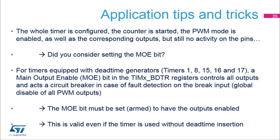This slide explains a common support case where the whole timer is configured, the counter is started, the PWM mode is enabled along with the corresponding outputs, but still there is no activity on the pins. Usually, this is because the MOE bit was not set. For timers equipped with dead time generators (timers 1, 8, 15, 16, and 17), a main output enable or MOE bit in the TIMX_BDTR register controls all outputs and acts as a circuit breaker in case of fault detection on the break input. The MOE bit must be set or armed to have the outputs enabled, even if the timer is used without dead time insertion for general purpose applications.